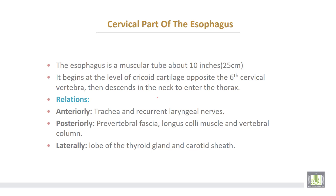The cervical part of the oesophagus: the oesophagus is a muscular tube about 10 inches or 25 centimeters. It begins at the level of the cricoid cartilage, opposite the sixth cervical vertebra, then descends in the neck to enter the thorax.